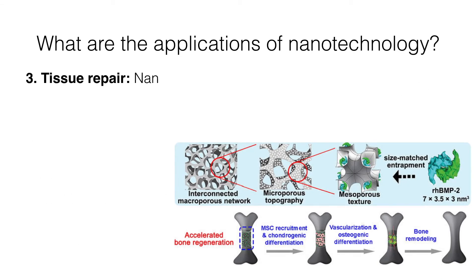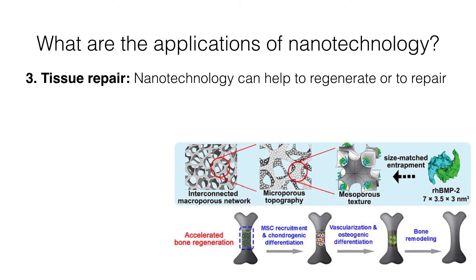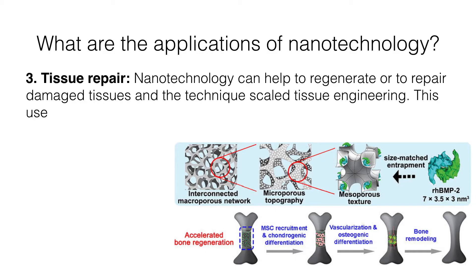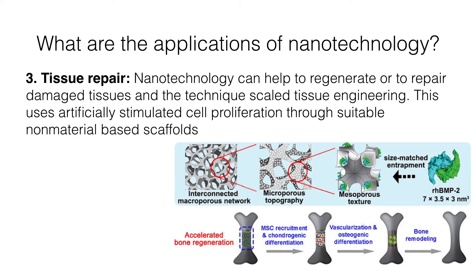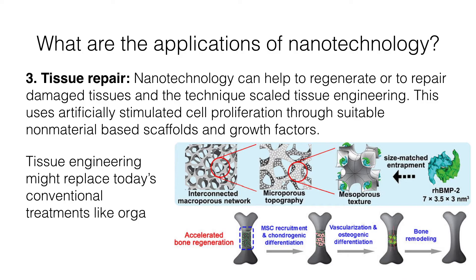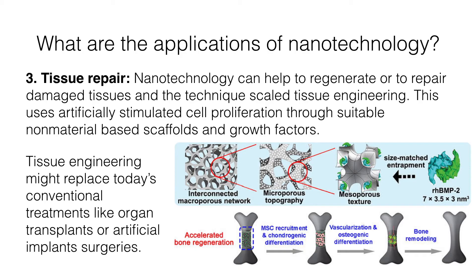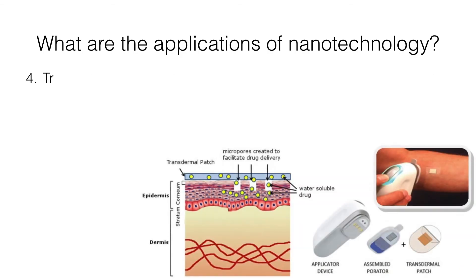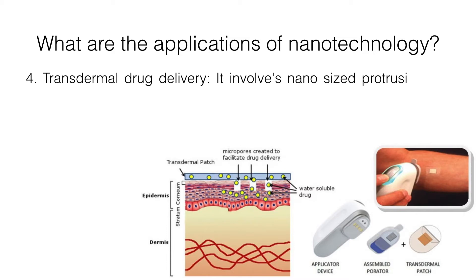Third, tissue repair. Nanotechnology can help to regenerate or repair damaged tissues through the technique called tissue engineering. This uses artificially stimulated cell proliferation through suitable nanomaterial-based scaffolds and growth factors. Tissue engineering might replace today's conventional treatments like organ transplants or artificial implant surgeries.